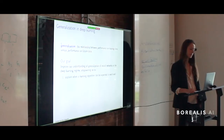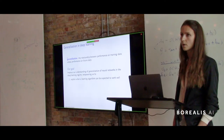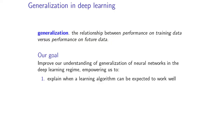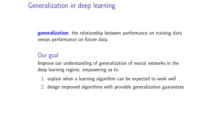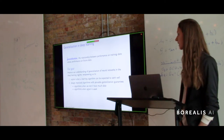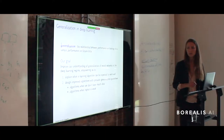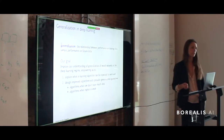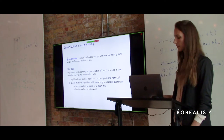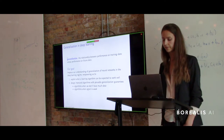That can help us understand or explain when and why the existing learning algorithms work well. And also, it can help us design improved algorithms with some provable generalization guarantees. For example, we might be interested in algorithms that work well when we don't have too much data, or maybe we have a lot of data but want an algorithm to work well when the signal is weak, so there is a lot of underlying uncertainty in the data.